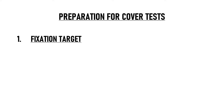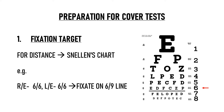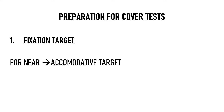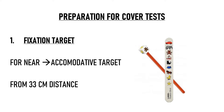Now let's begin our discussion on cover tests. For preparation, we need a fixation target for both distance and near. For distance, we use the Snellen's chart. If the patient's vision is 6/6 in both eyes, we ask him to fixate on the 6/9 line. We choose a line one step larger than the vision in his worst eye. For near, we prefer an accommodative target like fixation cubes or fixation sticks, especially when examining children. Otherwise, we can use the tip of a pen or a torchlight. Near testing is done from a distance of 33 cm.